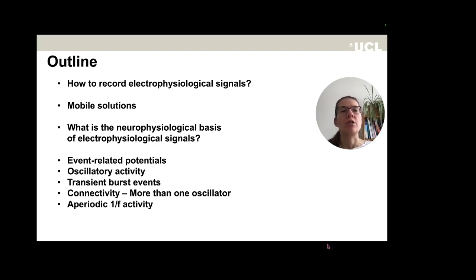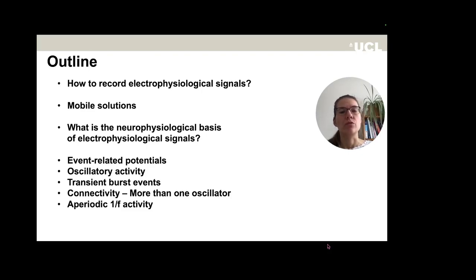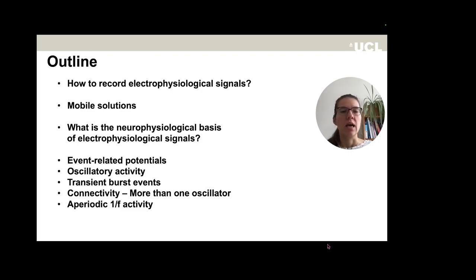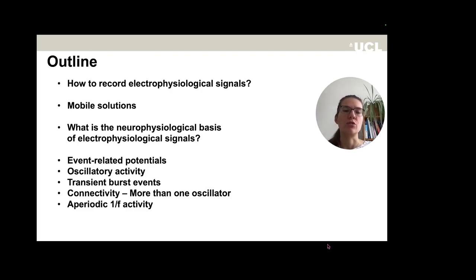We'll discuss the neurophysiological basis of EEG or MEG signals, and then go into the most popular signatures: event-related potentials, oscillatory activity, and transient burst events. We will also touch upon connectivity and aperiodic 1-over-F activity, the last two only very briefly, just to highlight what makes them different from the other signal signatures.